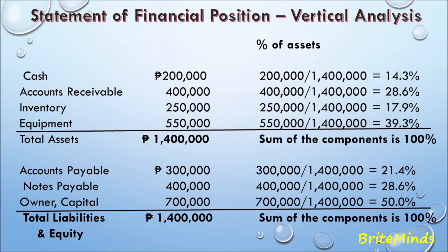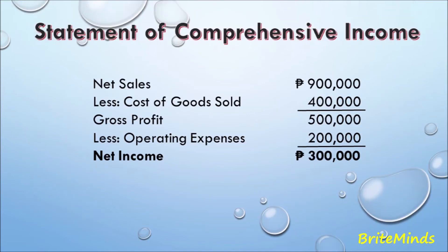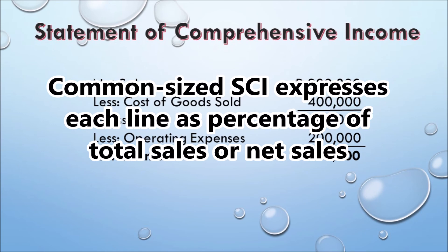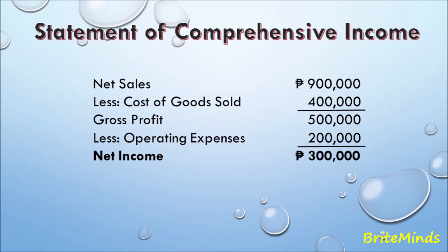Here is an example of how to perform vertical analysis for the statement of comprehensive income. A common size statement of comprehensive income expresses each line as a percentage of sales, so the base amount will be net sales. This way we can see how sales is used up by various expenses, and effectively net income is the portion of sales not consumed by expenses.